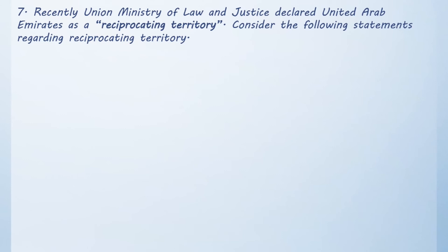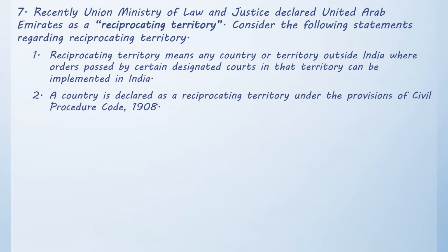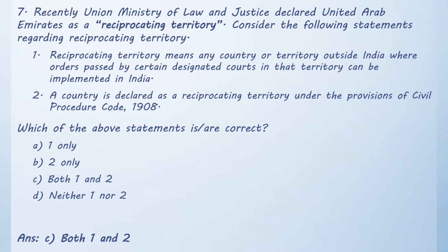Next question: recently, the Union Ministry of Law and Justice declared the United Arab Emirates as a reciprocating territory. Consider the following statements. Statement 1: A reciprocating territory means any country or territory outside India where orders passed by certain designated courts in that territory can be implemented in India. Statement 2: A country is declared as a reciprocating territory under the provisions of the Civil Procedure Code, 1908. Which are correct? Option A: 1 only. Option B: 2 only. Option C: Both 1 and 2. Option D: Neither. The correct answer is Option C, both one and two.